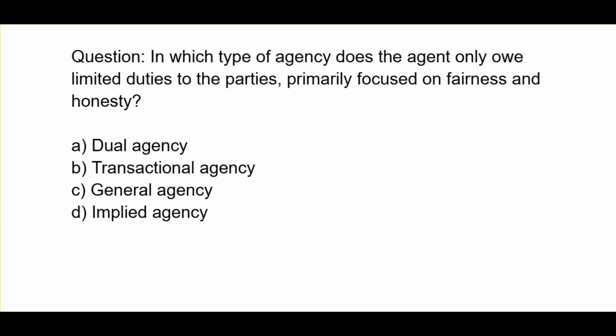Which type of agency does the agent only owe limited duties to the parties, primarily focused on fairness and honesty? A. Dual agency. B. Transactional agency. C. General agency. D. Implied agency.